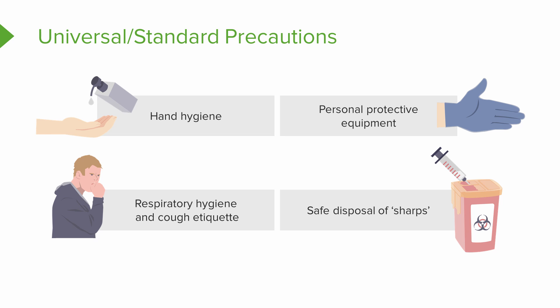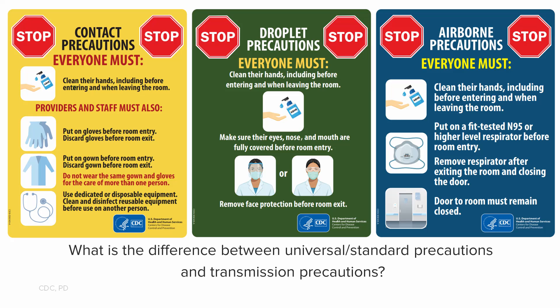So that's universal or standard precautions in a nutshell: hand hygiene, respiratory hygiene and cough etiquette, personal protective equipment which for now is mainly going to be gloves, and the fourth one is disposing of sharps safely. As we've already introduced, transmission precautions are specific to how the disease spreads. Now we'll look at these and break them down.